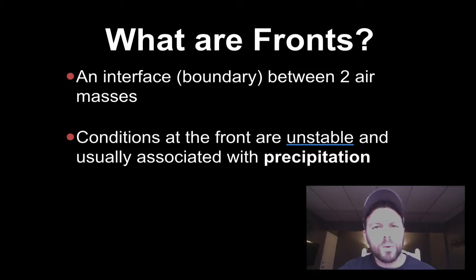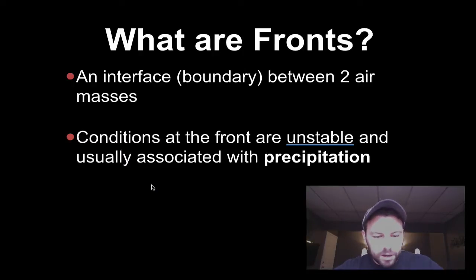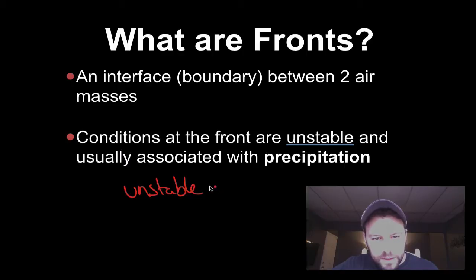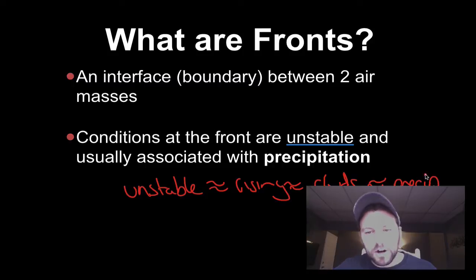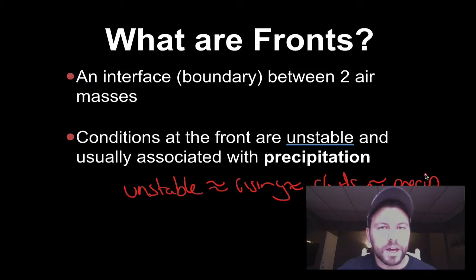At the interface of these fronts, or the boundaries where they kind of come together, the air is going to be unstable. Unstable air is usually associated with rising air, and then clouds will follow and sometimes precipitation. So unstable air leads to rising air, rising air is going to usually have clouds, and clouds are associated with precipitation.